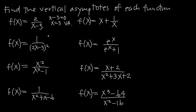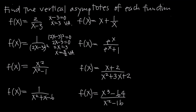Looking at our second example, we'll take the denominator and set 2x minus 3 squared equal to 0. If we take the square root of both sides, we get 2x minus 3 equal to 0. Adding 3 to both sides gives 2x equal to positive 3. Dividing both sides by 2, we get x equals 3 halves as our vertical asymptote. The domain is all x not equal to 3 halves. If we plugged in 3 halves, the 2's cancel and we get 3, then 3 minus 3 is 0, 0 squared is 0, so we have 0 in the denominator — confirming it's a vertical asymptote.